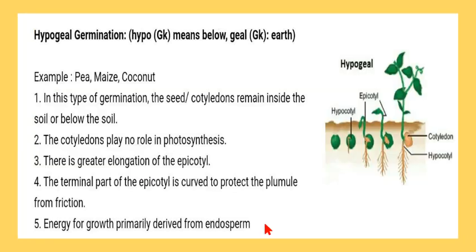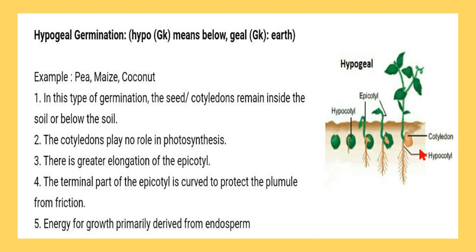The second type is hypogeal germination. 'Hypo' means below and 'geo' means earth. In this germination, the cotyledons remain inside the ground and play no role in photosynthesis. Elongation of the epicotyl occurs — the epicotyl is the portion of the embryo which develops into stem and leaves — so it elongates, while the hypocotyl does not elongate and remains shortened, keeping the cotyledons inside the ground. The epicotyl's terminal portion is also curved to protect the plumule from friction. Energy for growth is derived from the endosperm in hypogeal germination. This type of germination exists in pea, maize, and coconut.